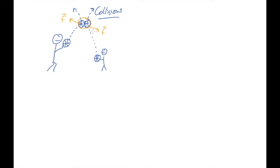Well then, if I add these forces together — if I look at the sum of the forces acting on these two basketballs — they're going to sum to zero, because Newton's third law tells me that this force is the same magnitude with the opposite direction of this one. So if I add them, I'll get zero.